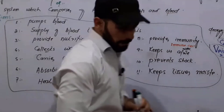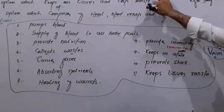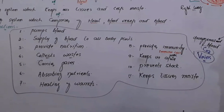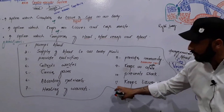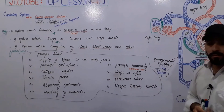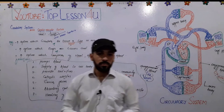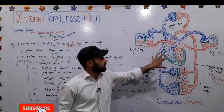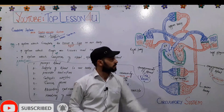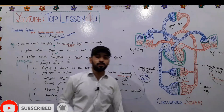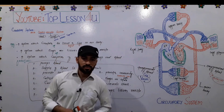So friends, these were some functions regarding the cardiovascular system. In this video we defined the cardiovascular system and discussed the functions it performs in our body. In the next lecture I will be discussing the first and most important part of the system, which is the heart. Be with us and subscribe to our channel. Thank you so much.